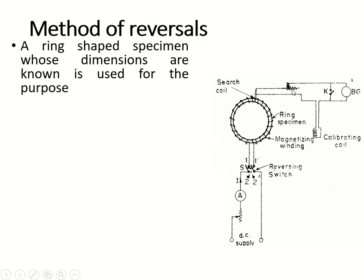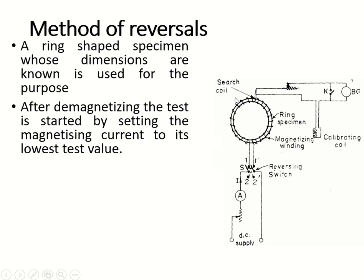The first method is the method of reversal. We have already studied about this experimental setup. This setup is mainly used for finding the magnetic flux density of a ring specimen. The same setup we are using for the method of reversal. A ring-shaped specimen whose dimensions are known is used for this purpose. Before doing the test, the ring specimen should be demagnetized — that is, it should not have any magnetic property. After demagnetizing, the test is started by setting the magnetizing current to a very low value.